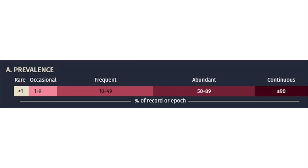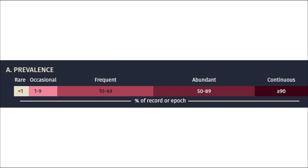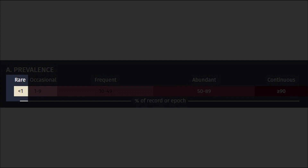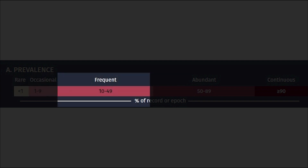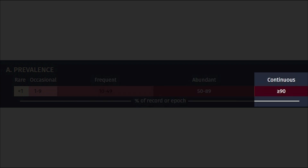There are also a number of additional terms called main modifiers important in describing rhythmic or periodic patterns. The first is prevalence over the EEG recording or epoch. Rare means less than one percent of the time; occasional is less than ten percent; frequent is between ten and fifty percent; abundant is between fifty and ninety percent; and continuous means the pattern exists for more than ninety percent of the recording.